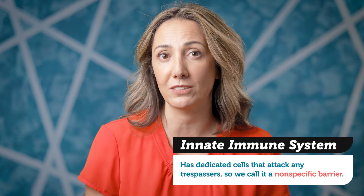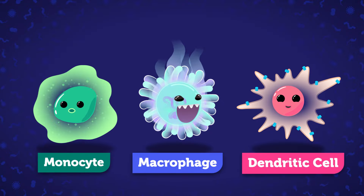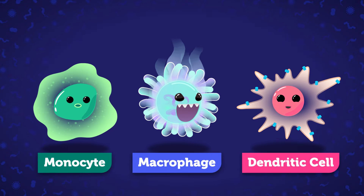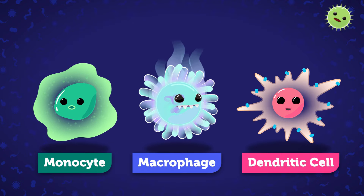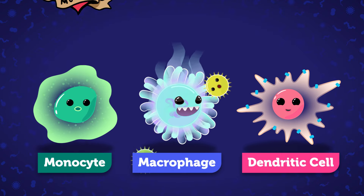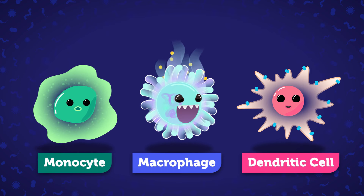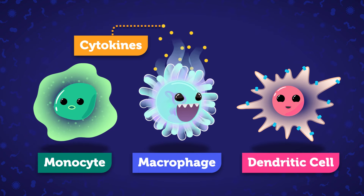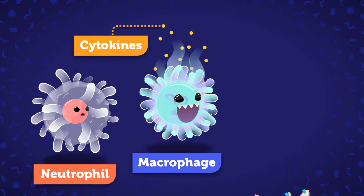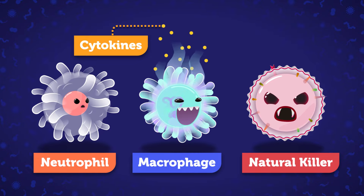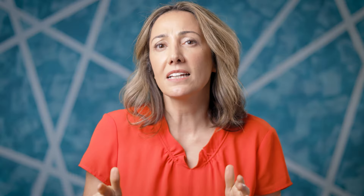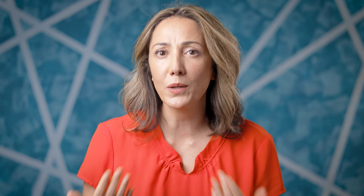Should any stubborn pathogen manage to break through, the second line of defense kicks in: the innate immune system. This system has dedicated cells that attack any trespasser, so we'll call it a nonspecific barrier. Monocytes cruise along your bloodstream looking for anything suspicious, while macrophages and dendritic cells keep an eye on your tissues. If they find something, they can digest the intruder — macrophages will eat anything dangerous-looking, even tattoo ink in your skin. When a macrophage begins its fight, it calls for help by releasing proteins called cytokines as a distress signal. At that point, tougher cells like neutrophils and natural killer cells will swoop in to help destroy tougher threats. The cells of the innate immune system are like the guards of the fortress, well-trained to neutralize most enemies that make it beyond the physical barriers.